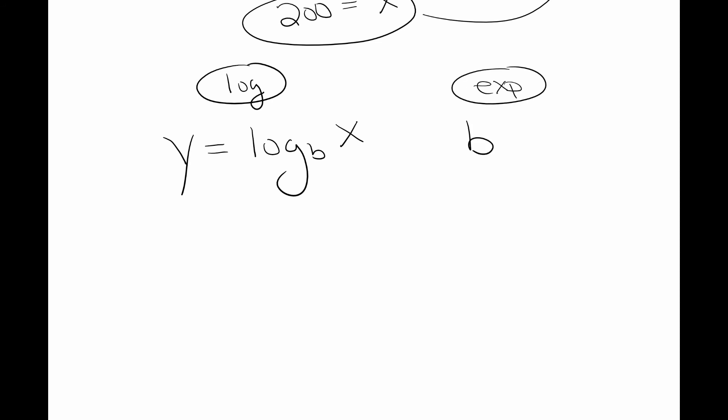So if you're talking about an inverse, all you're doing is switching your x and y. Your base is always going to stay the same, so the base of the log is going to be the base in your exponential. Then you just switch the x and y. Instead of b being with x, b is going to be with y, and instead of y being by itself, the x is going to be by itself.